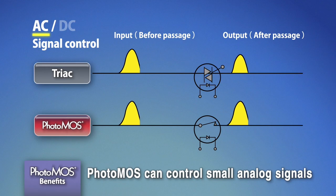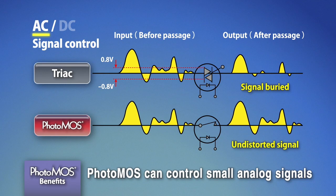For example, when a TRIAC controls an AC signal, the signals of ON voltage less than 0.8 volts get buried.